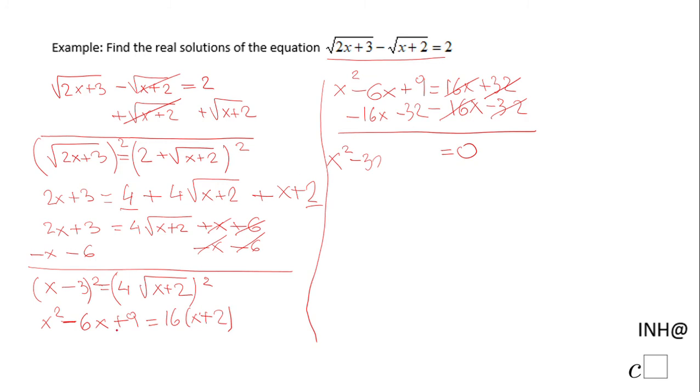Minus 22x minus 23. Here we can use factoring. We're looking for two numbers whose product is negative 23 and the sum is negative 22.